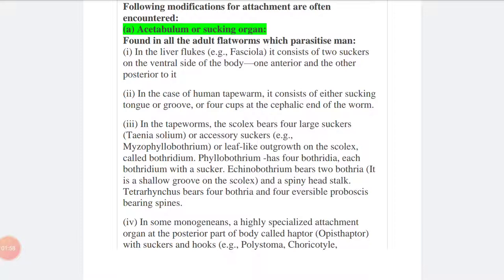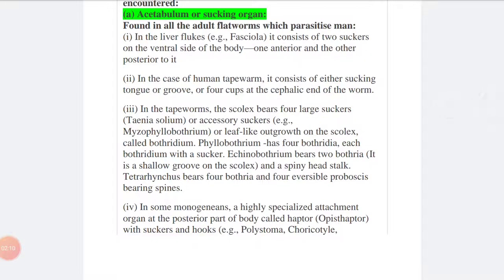In the case of human tapeworms, it consists of either sucking tongue or groove or four cups at the cephalic end of the worm. Cephalic end means at the anterior part of the flatworm. In the tapeworm, the scolex bears four large suckers like Taenia solium, or accessory suckers or leaf-like outgrowth on the scolex called the bothridium.